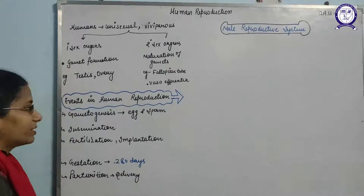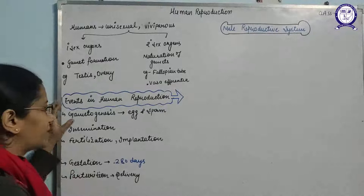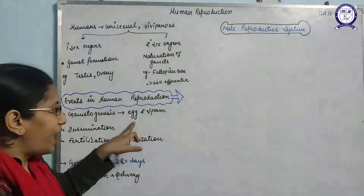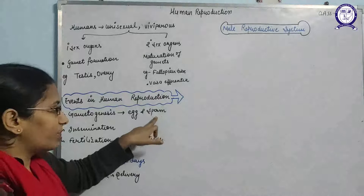Now we will discuss the events that take place in human reproduction. First is gametogenesis — the process of formation of gametes. In humans, two types of gametes are produced: the egg in the female ovary, and the formation of the egg is called oogenesis. In the male, sperm is produced, and the formation of sperm is called spermatogenesis.